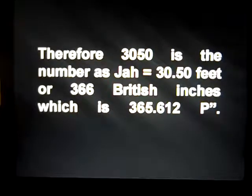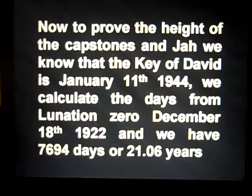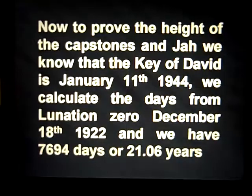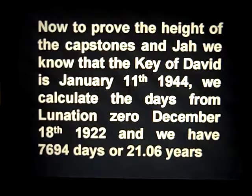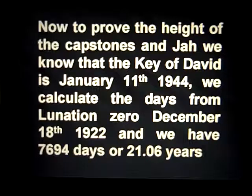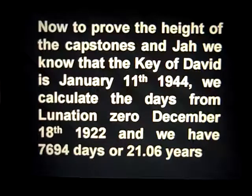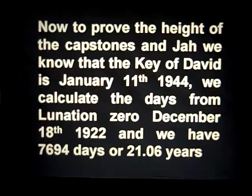Which is 365.612 pyramid inches. Now to prove the height of the capstone and Yah, we know that the Key of David is January 11th, 1944. We calculate the days from lunation zero — December 18, 1922 — and we have 7,694 days, or 21.06 years.